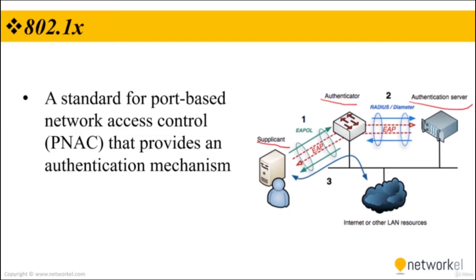The credentials could include a username and password or a permitted digital certificate. The authenticator forwards these credentials to the authentication server to decide whether access is to be granted. If the authentication server determines the credentials are valid, it informs the authenticator, which in turn allows the supplicant to access resources located on the protected side of the network.